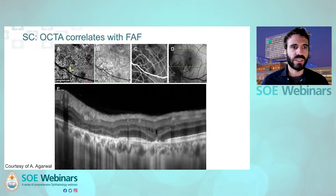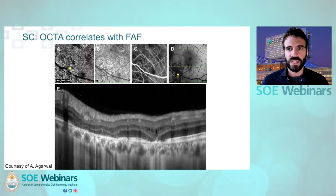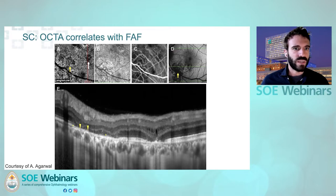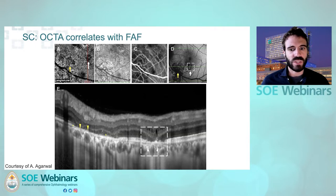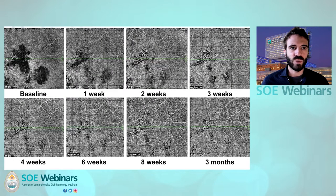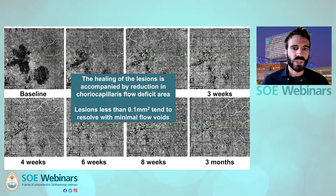Here is OCTA of the chorocapillaris in a patient with serpiginous choroiditis — you can see the transmission and blood vessels inside, corresponding to complete atrophy of the chorocapillaris and RPE on fundus autofluorescence. The second lesion shows on OCTA a complete flow void, meaning the lesion is active and slightly hyper on autofluorescence because the overlying RPE is suffering and reacting. It has been proven by the Indian group that lesions in serpiginous choroiditis less than 0.1 square millimeters on OCTA flow void tend to resolve better with minimal flow void.